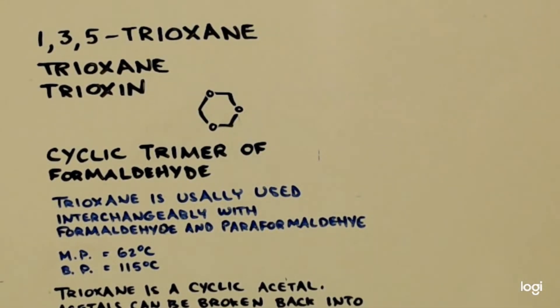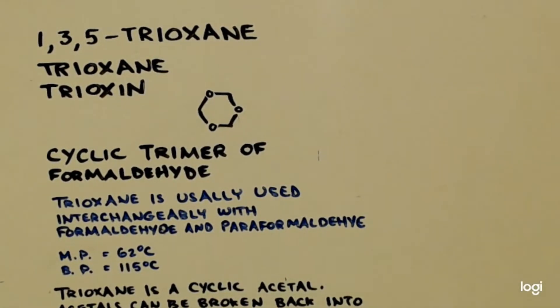Trioxane is usually used interchangeably with formaldehyde and paraformaldehyde. It has a melting point of 62 and a boiling point of 115. And that's why we didn't use a water cold condenser, because it solidifies so easily. You want to have a heat gun like this, an industrial heat gun that gets real hot.